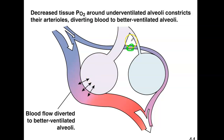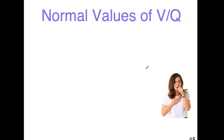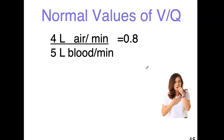This is brilliant because you don't want to be wasting blood or wasting oxygen here. So what are the normal VQ values? 4 liters of air per minute is a usual ventilation, and about 5 liters of blood per minute going past these alveoli, giving you a ratio of about 0.8. That's a normal VQ ratio.